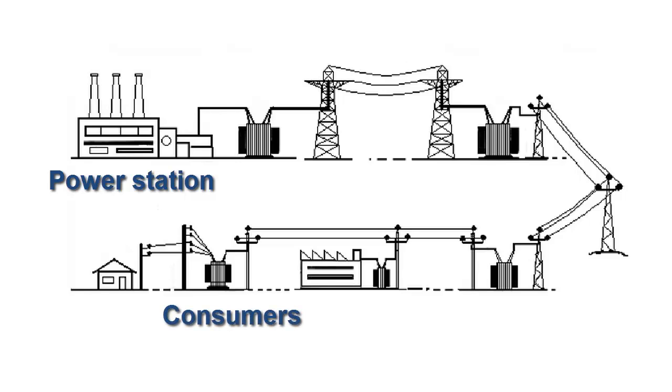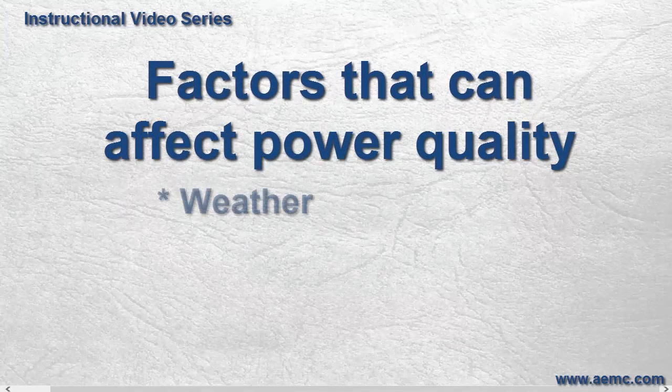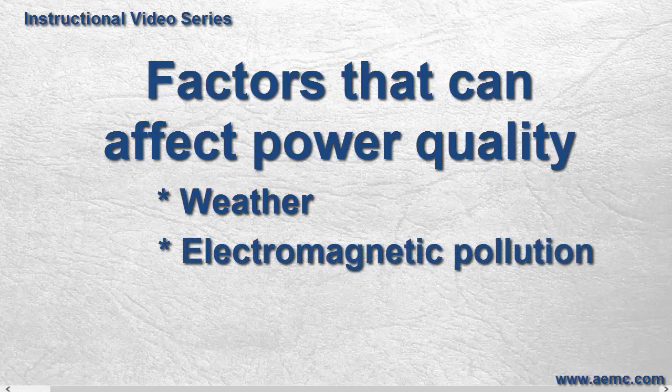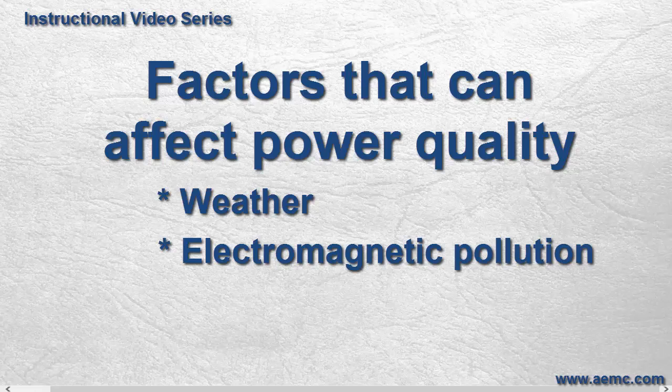Although the electricity produced by the energy plant may be of high quality, factors such as lightning and other weather phenomena, various forms of electromagnetic pollution and disturbances, and other influences can introduce degradations, such as supply interruptions and voltage dips.